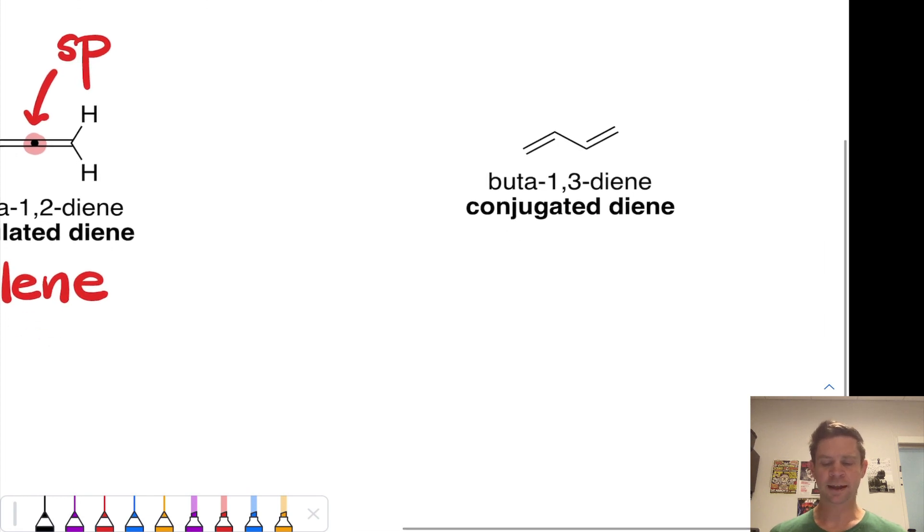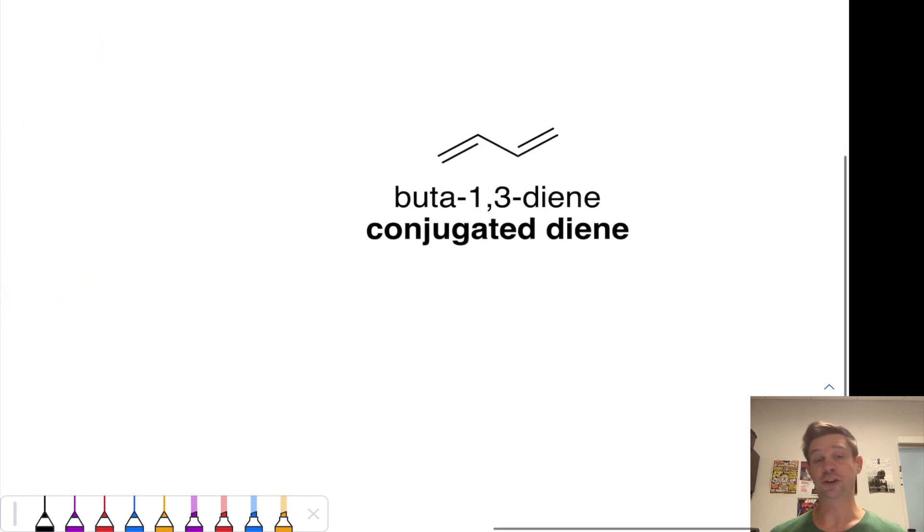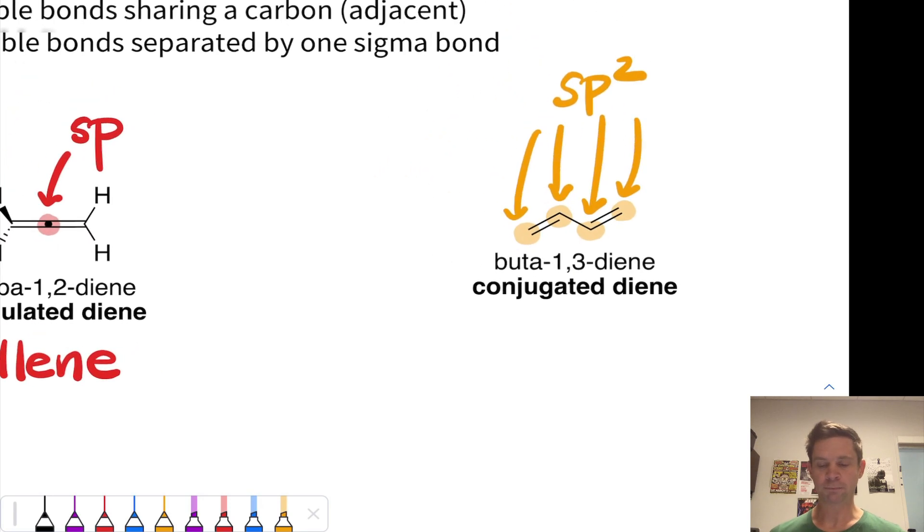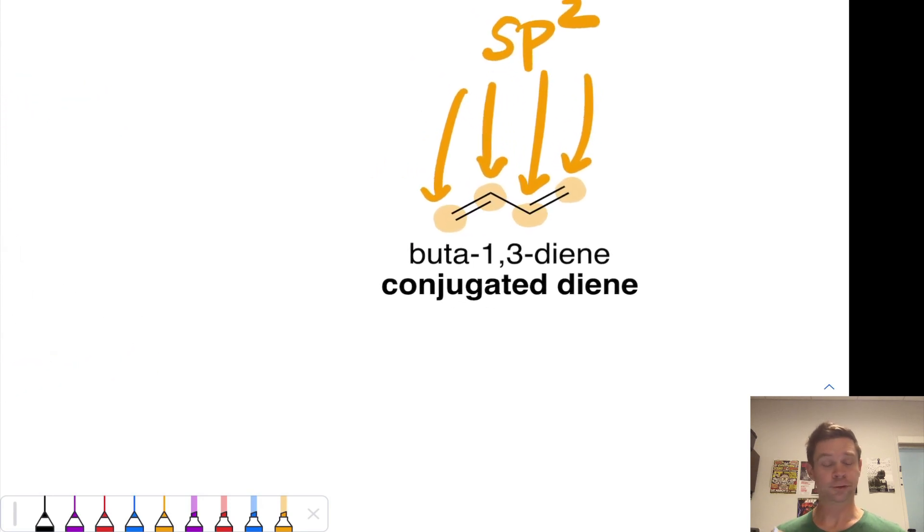Finally, here we have what is a bona fide conjugated diene, buta-1,3-diene. Notice it's characterized by two double bonds separated by a single bond. This creates a situation where all four atoms in this molecule have sp2 hybridization. This is worth checking on your own. Just to check it, we can draw little nubs here to indicate where the hydrogens are located.